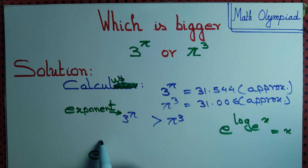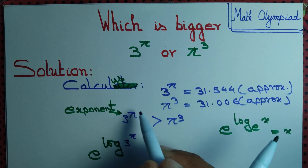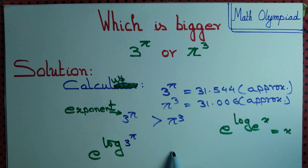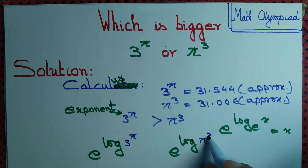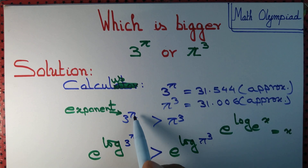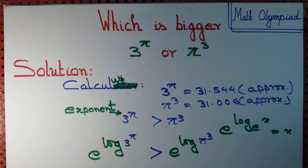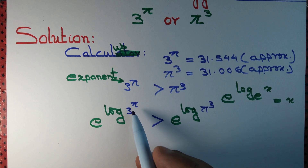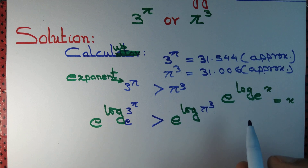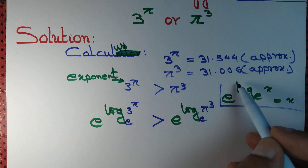e to the power log of (3 to the power pi) is simply equal to 3 to the power pi. Similarly, e to the power log of pi cubed is simply equal to pi cubed. So we replace 3 to the power pi by e to the power log of 3 to the power pi — log with base e — and pi cubed by e to the power log of pi cubed, using this identity.